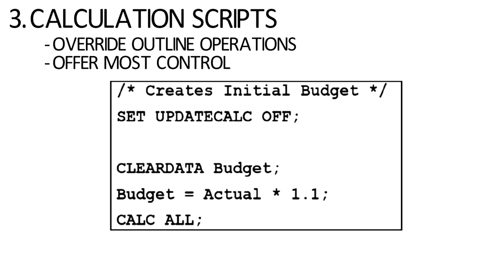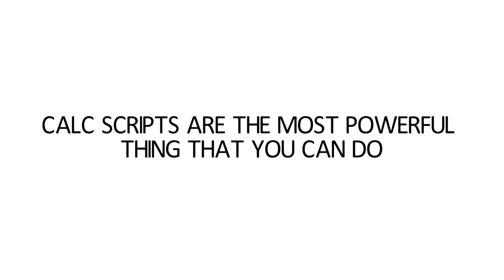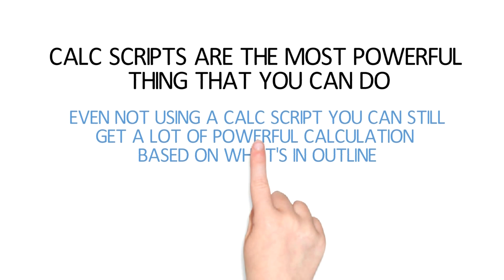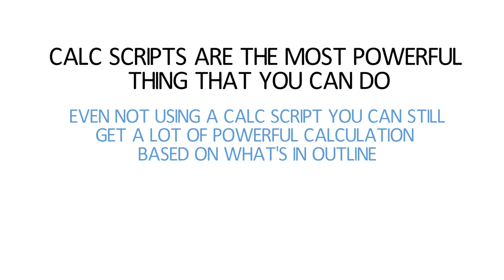In our sample script here, we're going to clear out all budget data in the database — obviously you don't want that to happen every single time you run a calculation. Then we want to take budget and set it 10% greater than what actuals are, which is how most people think about top-level budgeting in their organization. Then the final line of that CalcScript is CalcAll, which means take all the data and aggregate it all the way up the hierarchy. CalcScripts are definitely the most powerful thing you can do, but even without a CalcScript you can still get a lot of powerful calculations just based on what's in the outline.